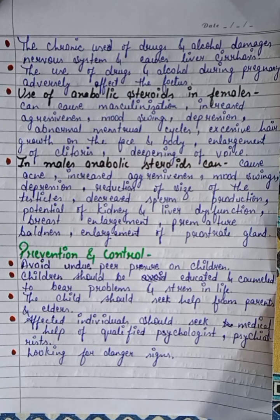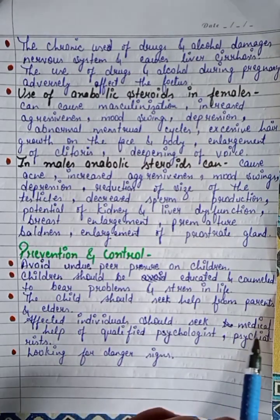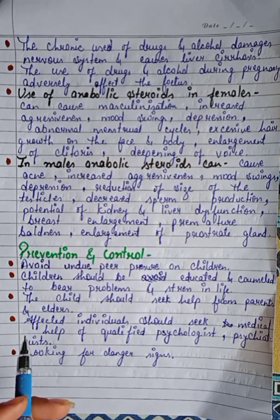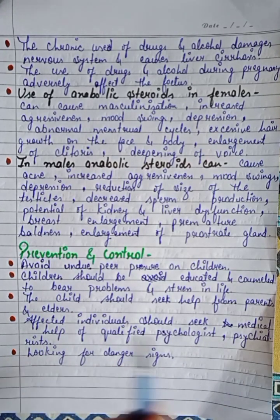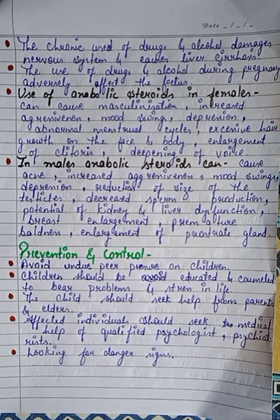Prevention and control: Avoid undue peer pressure on children. Children should be educated and counseled on how to cope with problems and stress in life, so they don't fall into depression. Children should seek help from parents and elders if facing problems. Affected individuals should seek medical help from qualified psychologists and psychiatrists.